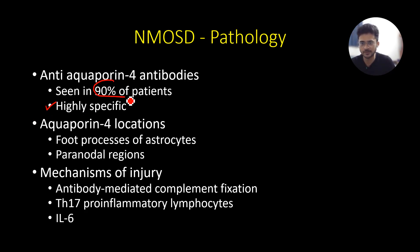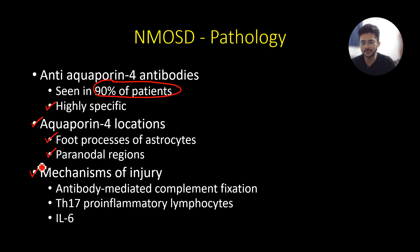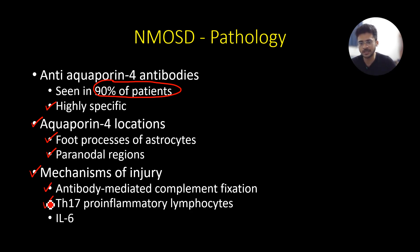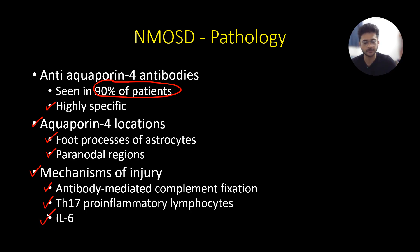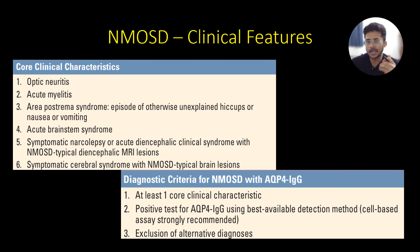The classical antibody described in NMOSD is the anti-aquaporin-4 antibody, which is highly specific and seen in 90% of patients. Aquaporin-4 is located in the foot processes of the astrocytes as well as the paranodal regions. The mechanisms of immunological injury include antibody-mediated complement fixation, Th17 pro-inflammatory lymphocytes, and interleukin-6.